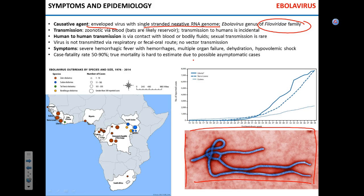The reservoir for Ebola is most likely bats, though we still aren't completely sure. Transmission to humans usually occurs after exposure to bat blood when bats are hunted and butchered. There are also accidental transmissions from monkeys to humans during bushmeat hunting. Transmission to humans is incidental — the virus does not normally reside in or infect humans. Human-to-human transmission occurs through contact with blood or bodily fluids, including saliva, sweat, urine, and feces.